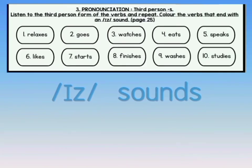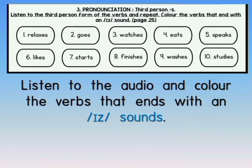Let's move on to exercise 3: Pronunciation — third person S. Listen to the third person form of the verbs and repeat. Colour the verbs that end with an IZ sound. Exercise 3: one — relaxes, two — goes, three — watches, four — eats, five — speaks, six — likes, seven — starts, eight — finishes, nine — washes, ten — studies.